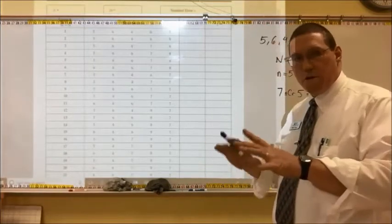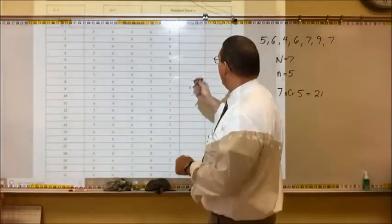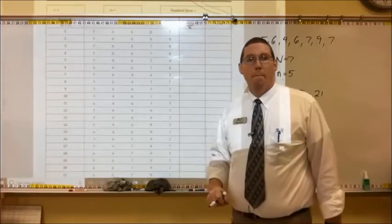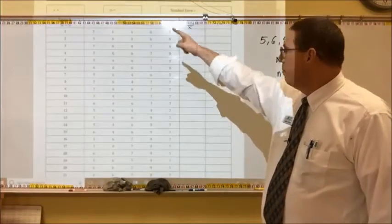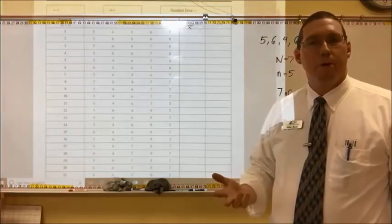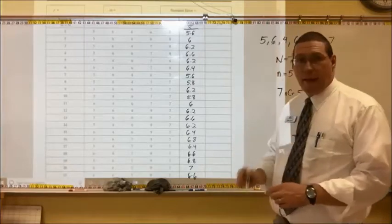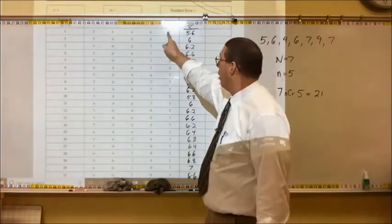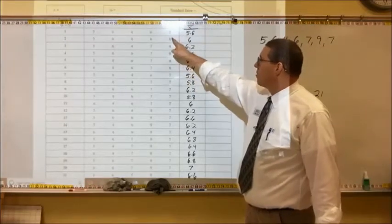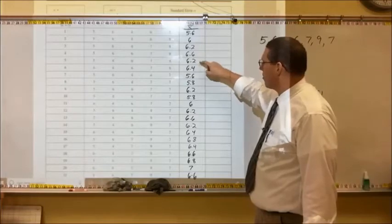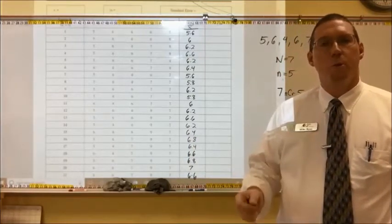Each one of these 21 samples has a sample mean. I'd like you to pause this video and see if you can calculate the sample mean for all 21 of these samples. I've gone through and calculated the average of all 21 of these samples — the sample mean of each sample. We just add up 5 numbers and divide by 5. I get 5.6 for this one, then 6, 6.2, 6.6, 6.2, 6.4, 5.6, and so on — 21 different means for 21 different samples.